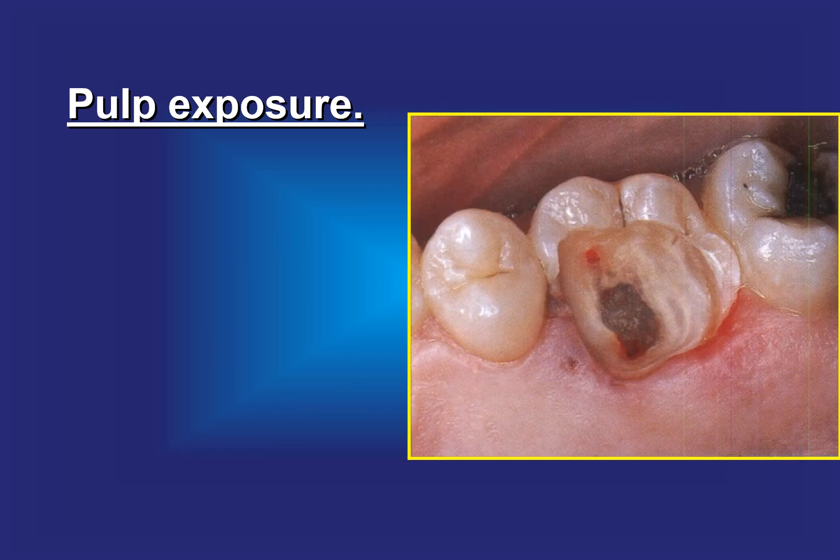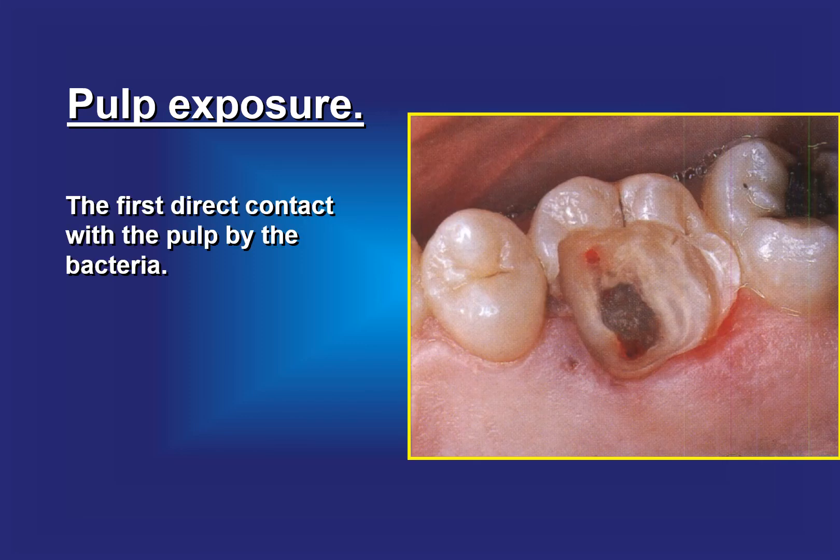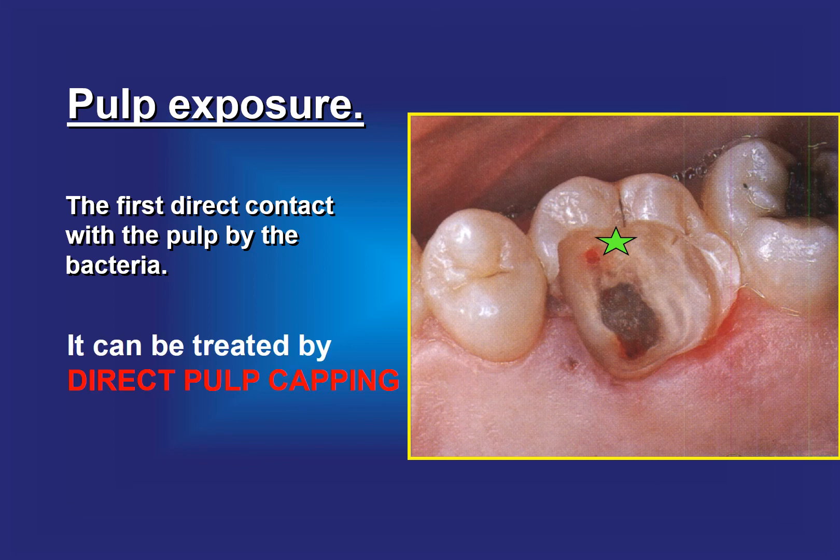Pulp exposure is the first direct contact with the pulp by the bacteria. It can be treated by direct pulp capping.